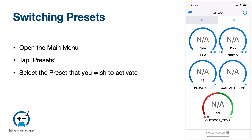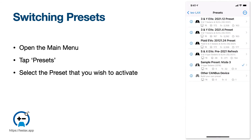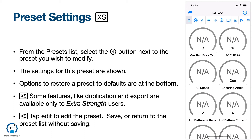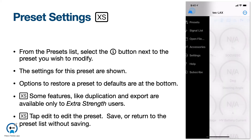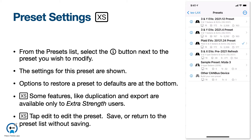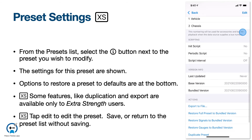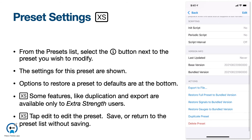To change presets, use the main menu and select presets. Tap the preset you wish to activate, and you'll notice that in this case the gauges and signals have all changed from a Mazda preset to a Tesla preset. There are several preset level settings that can be edited from the preset list. Note that editing presets is reserved for users who have purchased the Extra Strength feature set. From the preset list, tap the I button next to the preset you wish to modify. The settings are shown, including the location augmentation, bus numbering, and script settings. At the bottom, there are some actions you can perform with this preset. To edit these settings, tap the Edit button in the upper right.